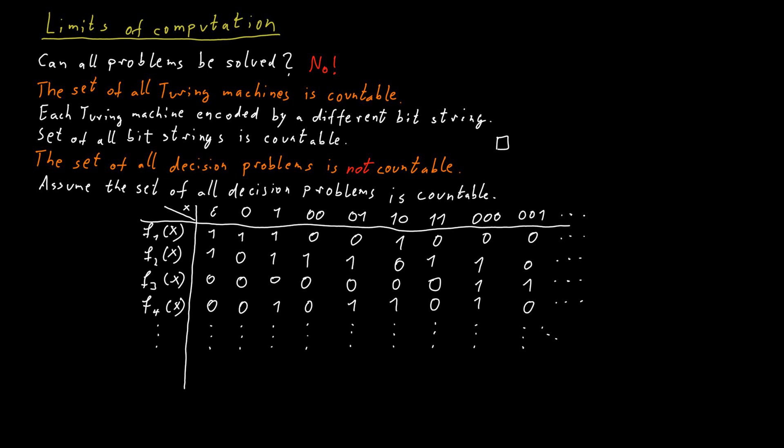I claim that we can construct a function that is not present in the table. We build this new function in such a way that it is easy to see that it appears nowhere in the table. So no row corresponds to that particular function. For this, we look at the diagonal entries in this table. That's why the technique is called diagonalization. So the diagonal entries here are 1, 0, 0, 0, and 0, and so on. We would go further down.